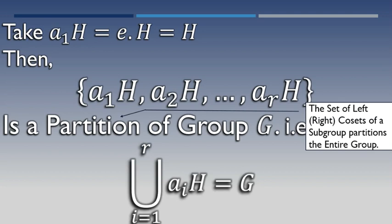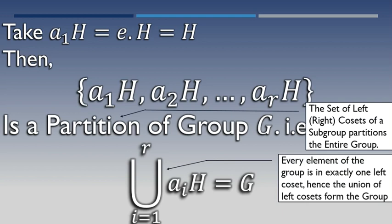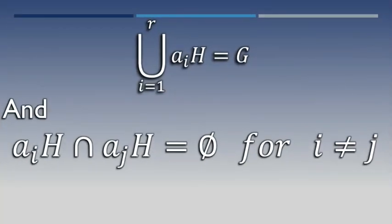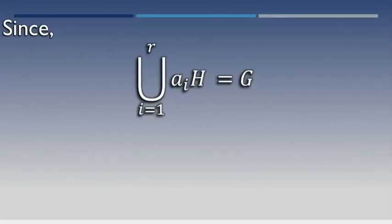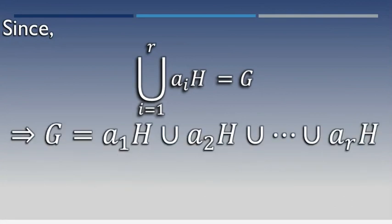The union from i=1 to r of aiH is equal to G. Every element of the group is in exactly one left coset; hence the union of left cosets forms the group G. Furthermore, any two left cosets either do not contain any common element or are equal — they are entirely distinct and contain no common elements.